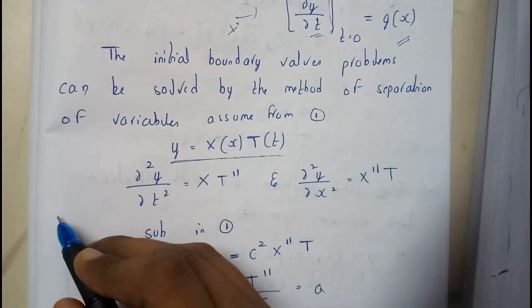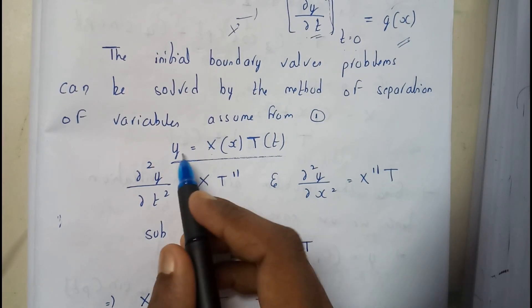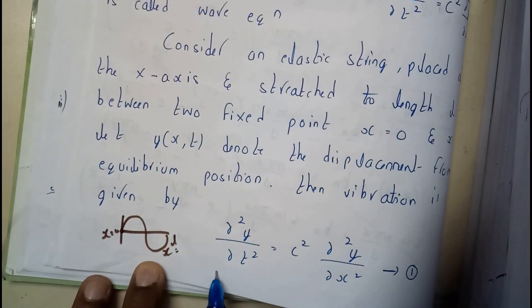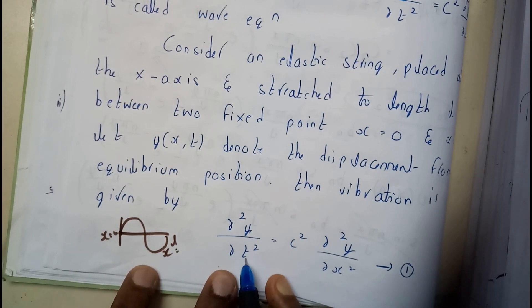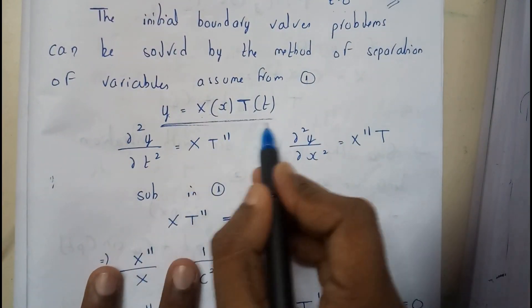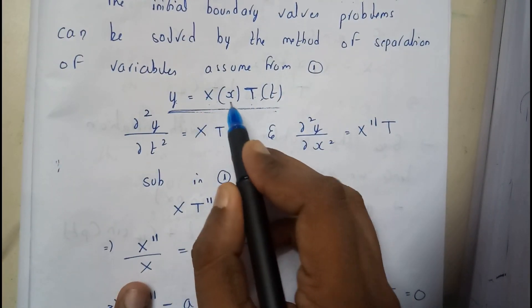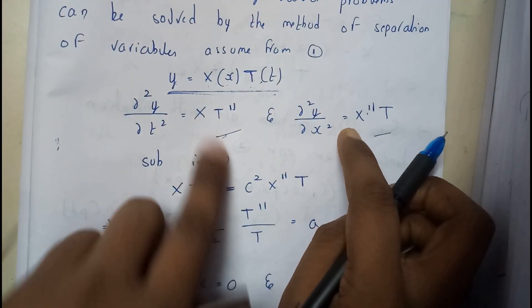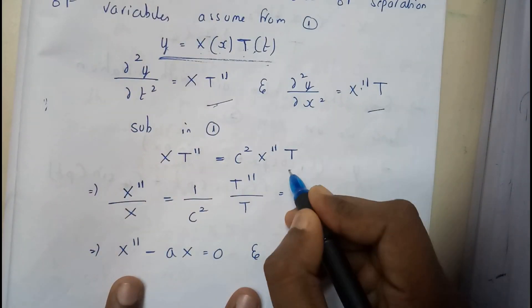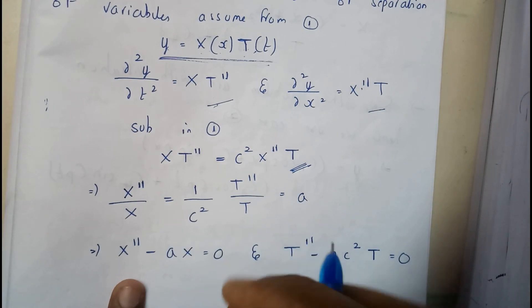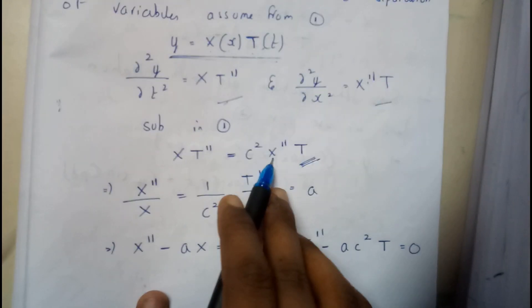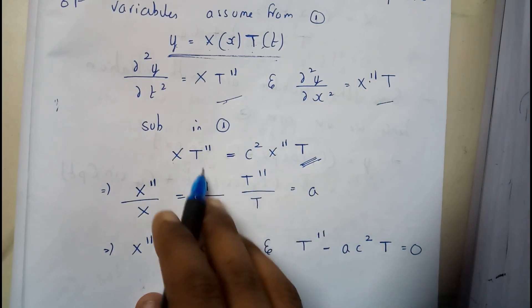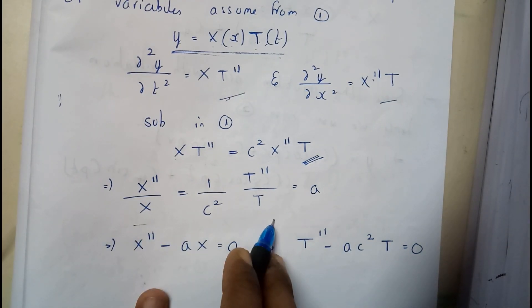Here the question is y in terms of x and t, so this will be our equation. From the main equation we will be differentiating y with respect to t twice and y with respect to x twice. So this is the y equation — I will differentiate it with respect to t twice and x twice. I got these equations and I substituted them into our main formula. From the method of separation of variables, I took X on one side and T on the other side, getting this equation.